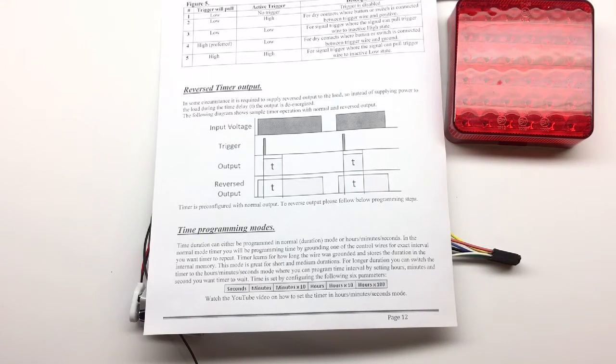So in the manual, you find this small section that outlines the functionality. It shows you the six parameters that you can set. You will be able to set the seconds, minutes, minutes by 10, hours, hours by 10, and hours by 100. When you set all those parameters, the time adds up.